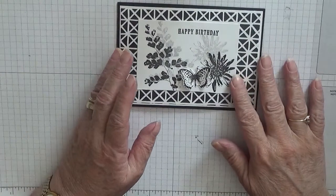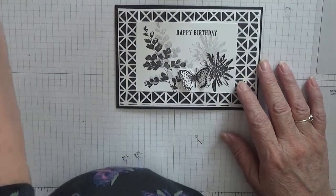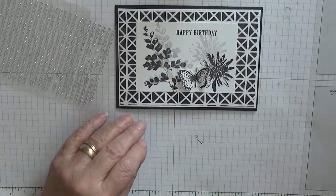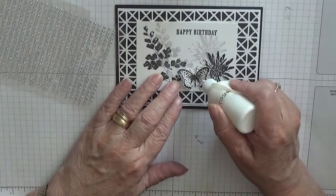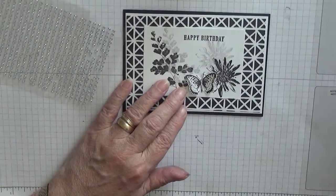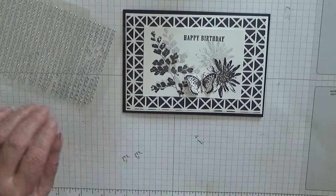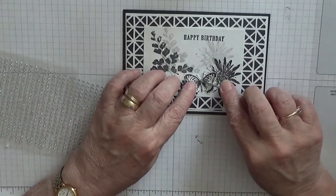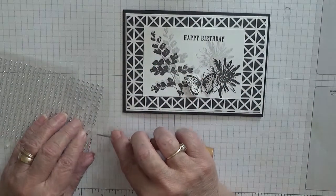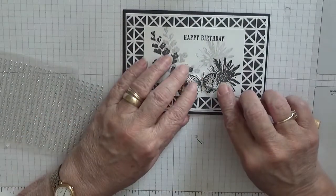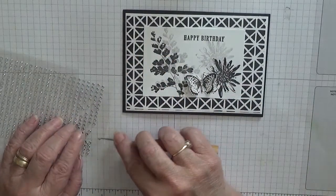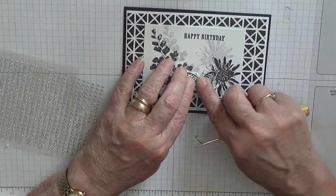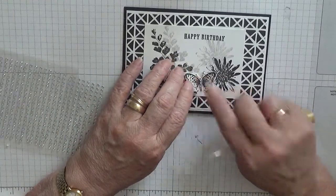So all we've got to do now is add some gems. I've got my silver gems and I'm going to put a bit of glue down this body and I am going to put three gems on. There we are.